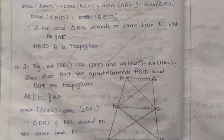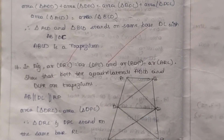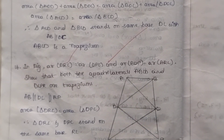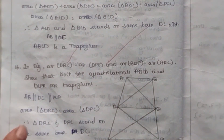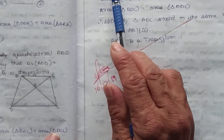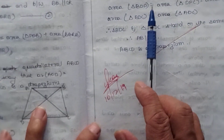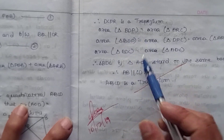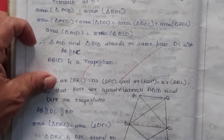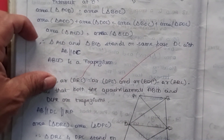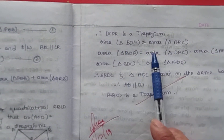DCPR is a trapezium, so area of triangle BDP is equal to area of triangle ARC. Triangles BDP and ARC are both larger triangles from which we subtract. Area of ARC minus area of DRC gives triangle ADC, and area of BDP minus area of DPC gives triangle BDC.